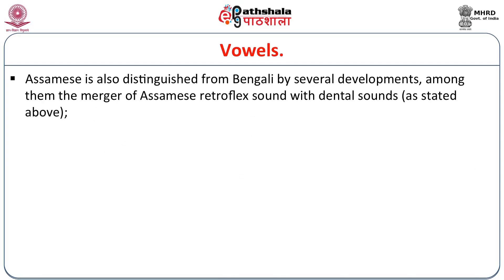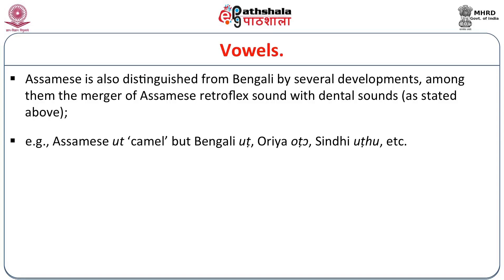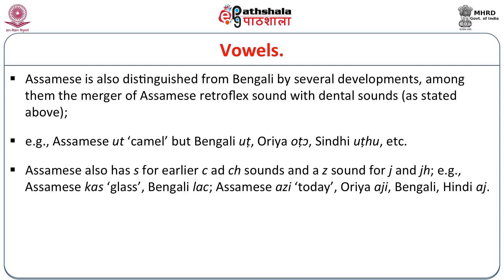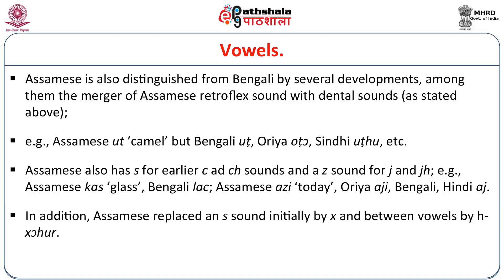Assamese is also distinguished from Bengali by the merger of Assamese retroflex sounds with dental sounds. For example, Assamese ut (camel), but Bengali ut, Odia uto, Sindhi utu, etc. Assamese also has sa for earlier cha and cha sounds, and a zha sound for jha and jha. For example, Assamese kas (glass), Bengali kach; Assamese azee (today), Odia aji, Bengali and Hindi aj. In addition, Assamese replaces an sa sound initially by cha and between vowels by cha — khoho is a good example for both.